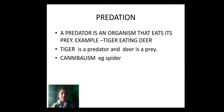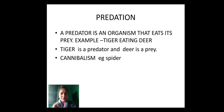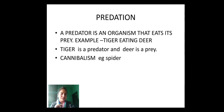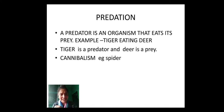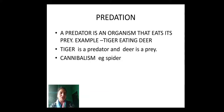Next, we have cannibalism — one of the strange or different kinds of association on this earth. Here, an organism eats another organism which belongs to the same species. For example, spider eating spider: when a baby spider is hungry and there is a lack of food, it eats its own mother. Here, spider is eating spider — both belong to the same species. This association where one organism feeds on another organism of the same species is called cannibalism.